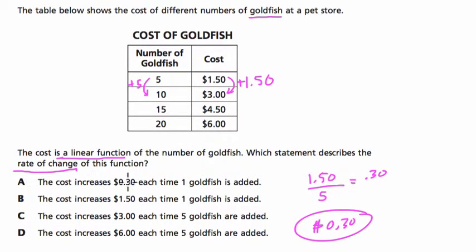And here in A, it says the cost increases $0.30 each time one goldfish is added. That seems to be correct.